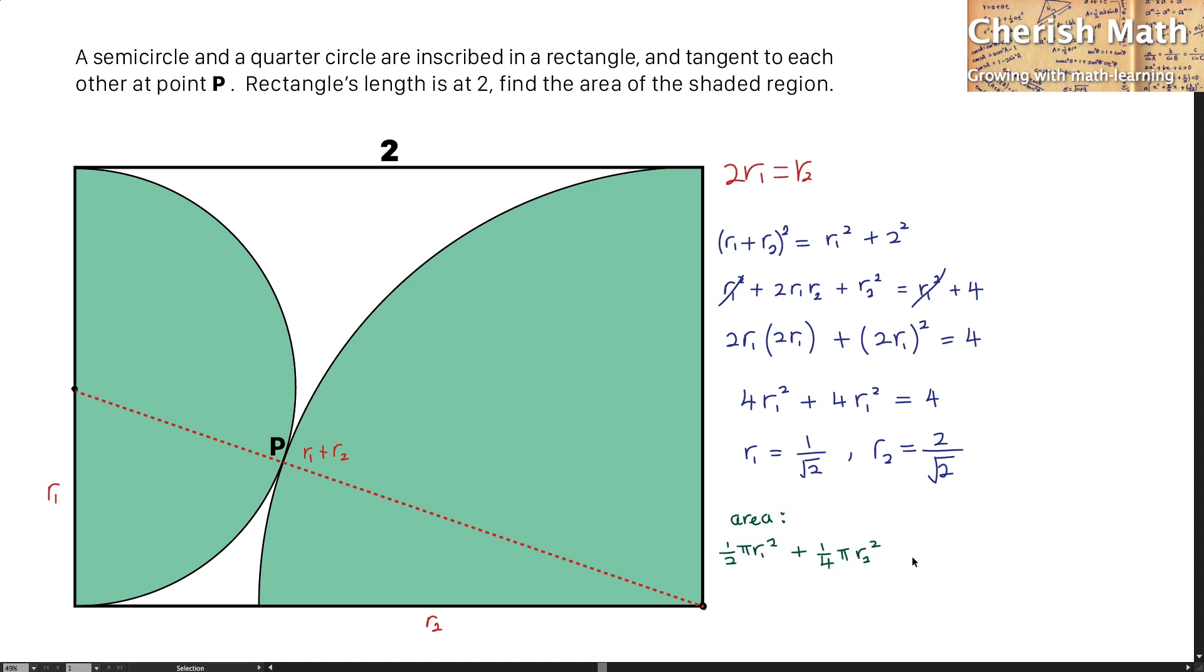I'm going to use one half pi R1 squared plus one quarter pi R2 squared. By substituting the value of R1 and the value of R2, it becomes this.